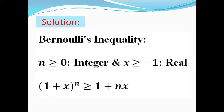First, let us remember Bernoulli's inequality because we will use it in the demonstration. If n is a positive integer, or n is greater than or equal to 0, and x is a real number greater than or equal to minus 1, then we can write (1 + x)^n is greater than or equal to 1 + nx.